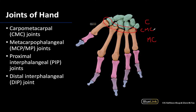Two through five of the CMC joints are plane joints, but this first carpometacarpal joint has considerably more mobility, being a saddle type joint — so it's capable of flexion, extension, abduction, and circumduction. There is a lot more mobility associated with that first digit.